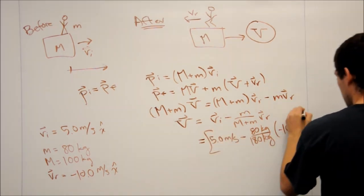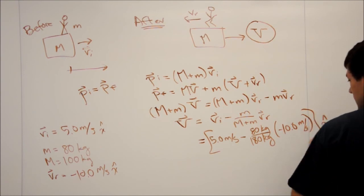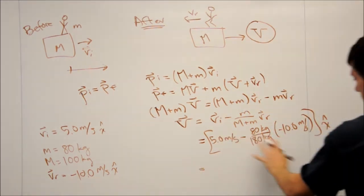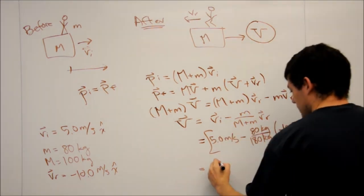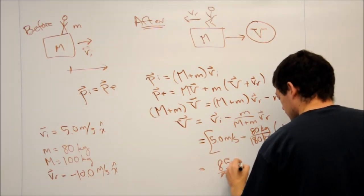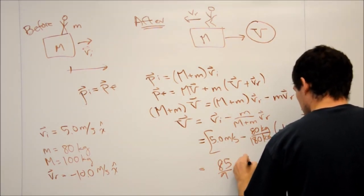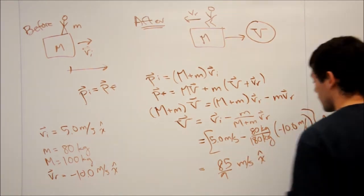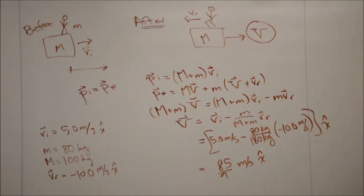And all of this is going to be times x hat. And if we solve this out doing all of this algebra, we're going to end up with 85 over 9 meters per second x hat. So that's the final velocity of the cart moving to the right.